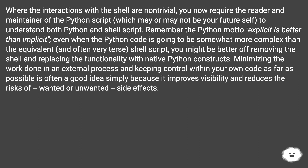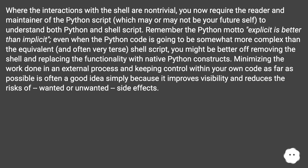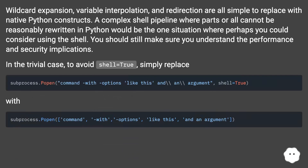Remember the Python motto: explicit is better than implicit. Even when the Python code is going to be somewhat more complex than the equivalent — and often very terse — shell script, you might be better off removing the shell and replacing the functionality with native Python constructs. Minimizing the work done in an external process and keeping control within your own code as far as possible is often a good idea, because it improves visibility and reduces the risks of wanted or unwanted side effects. Wildcard expansion, variable interpolation, and redirection are all simple to replace with native Python constructs.